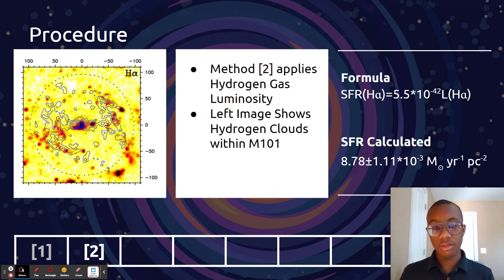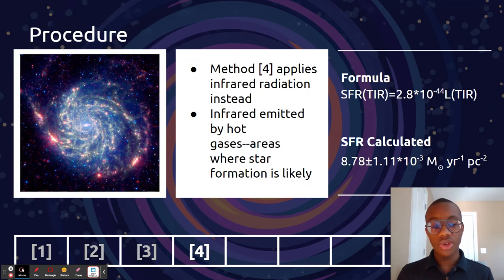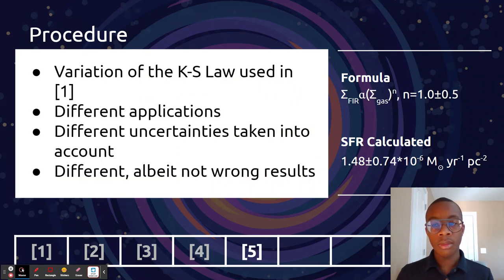Method two uses hydrogen gas luminosity. Method three uses the ultraviolet spectrum emission, so how bright stuff is in that spectrum. Method four uses infrared radiation, so how hot stuff is. Method five was a variation of the law used in method one with different applications and different uncertainties taken into account.